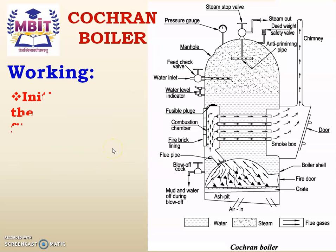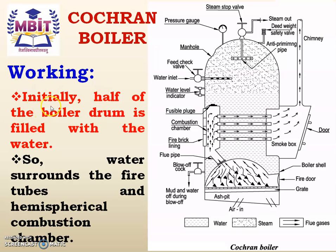Now we are going to study the working of the Cochran boiler. Initially, half of the boiler drum is filled with water, because water is required to convert into steam. The water surrounds the fire tubes and the hemispherical combustion chamber. As the water fills the boiler drum, the tubes are surrounded by water, and water is also present outside the hemispherical combustion chamber.